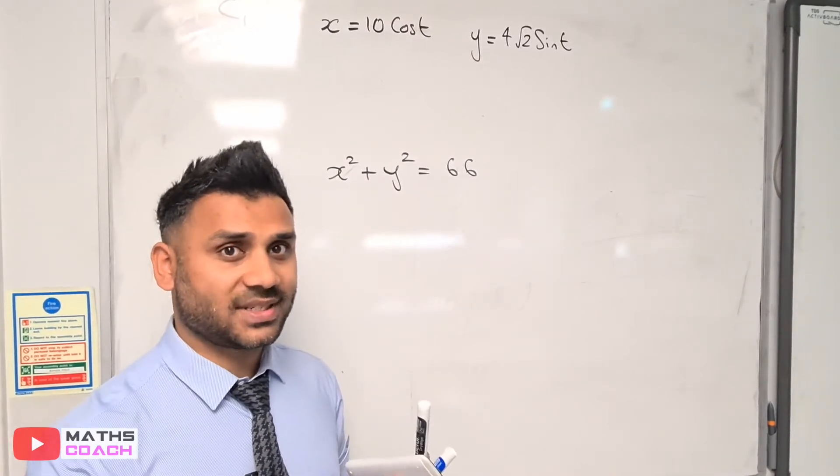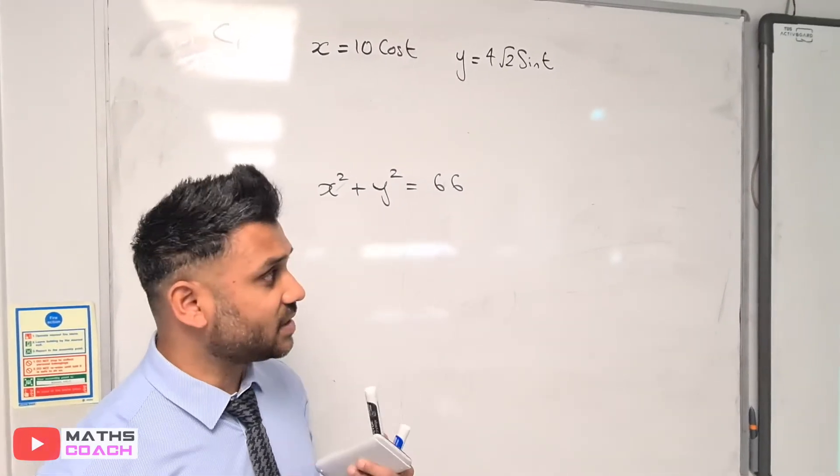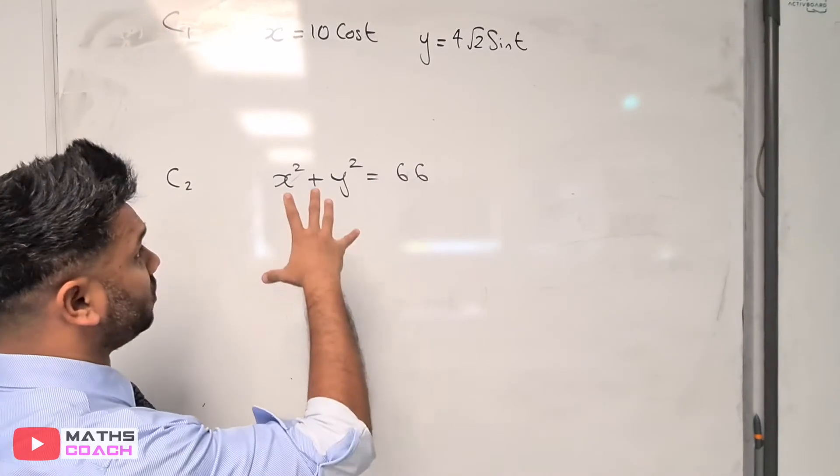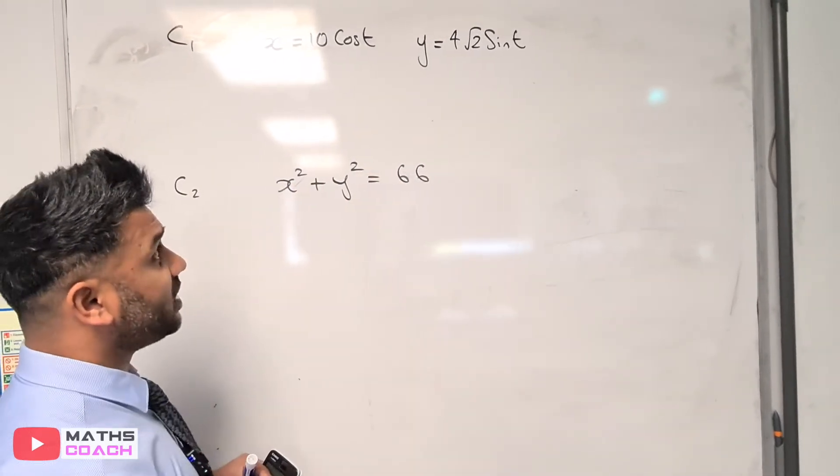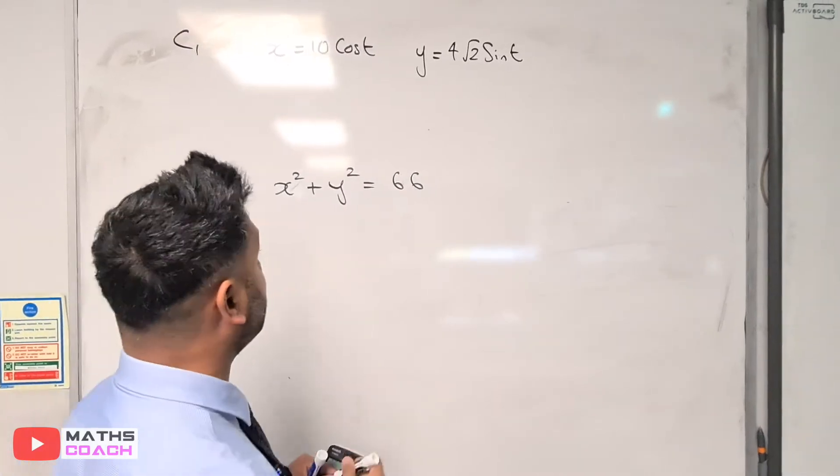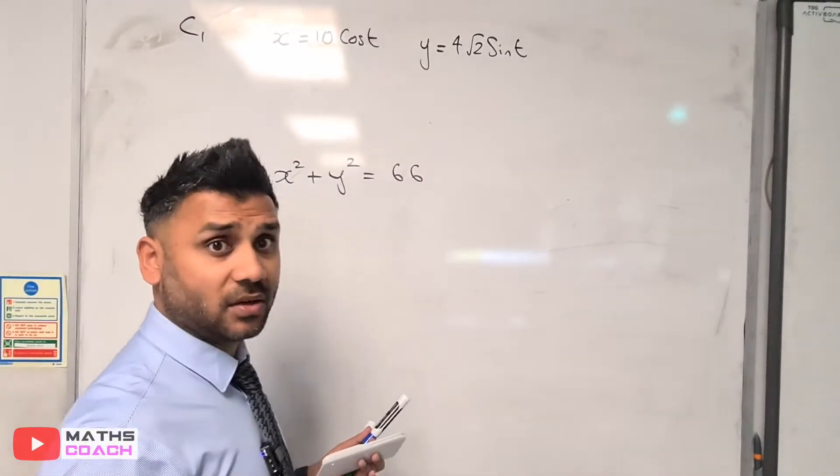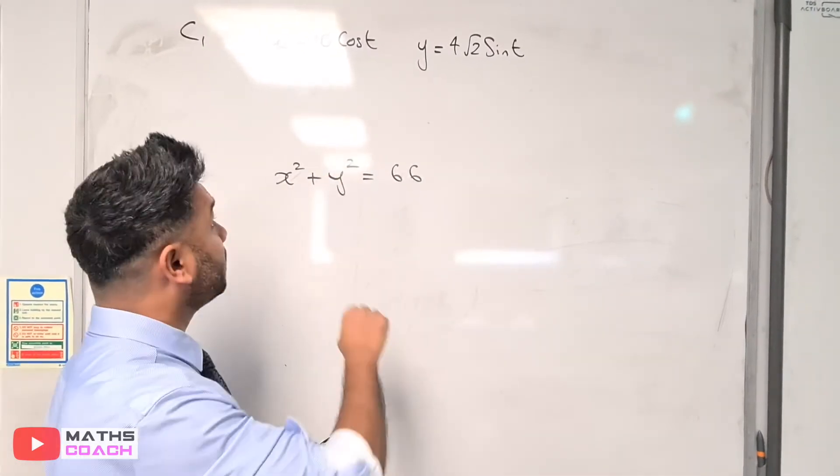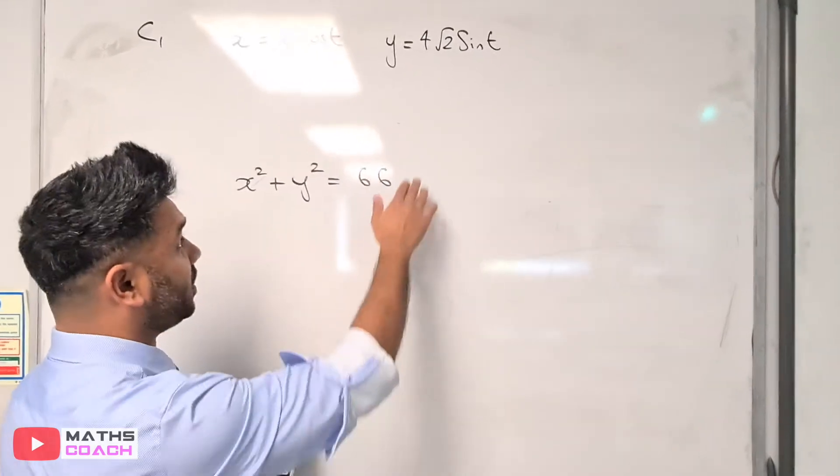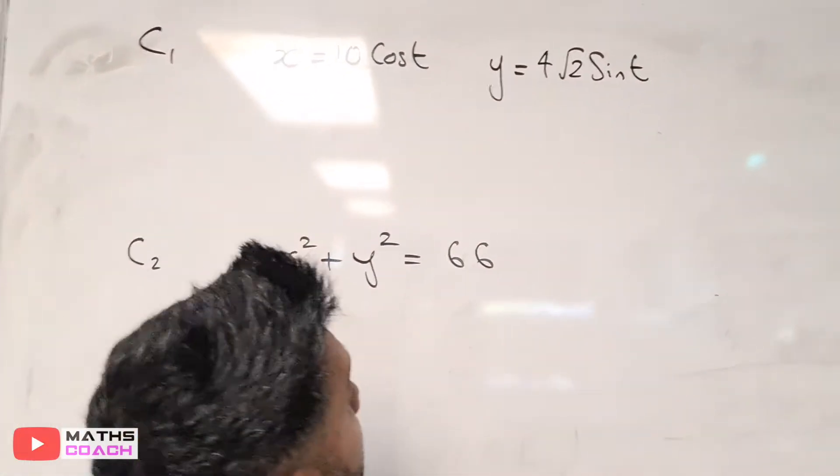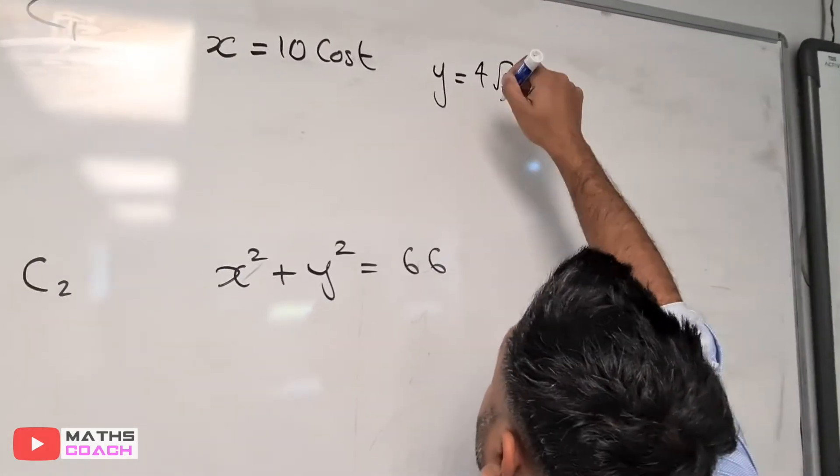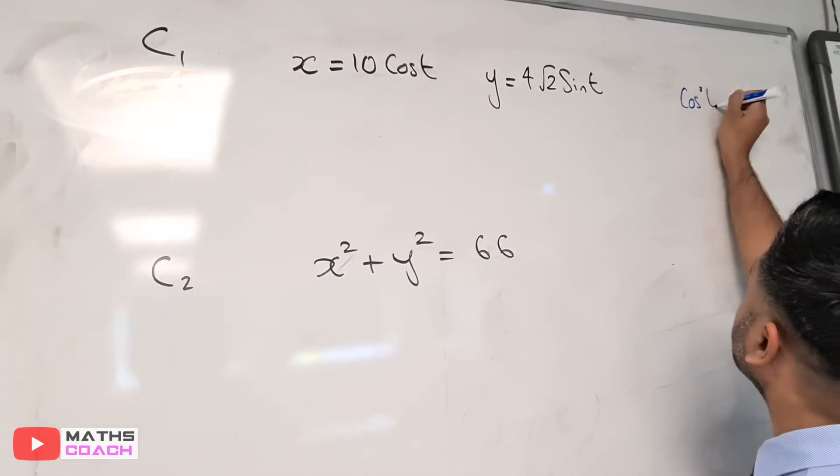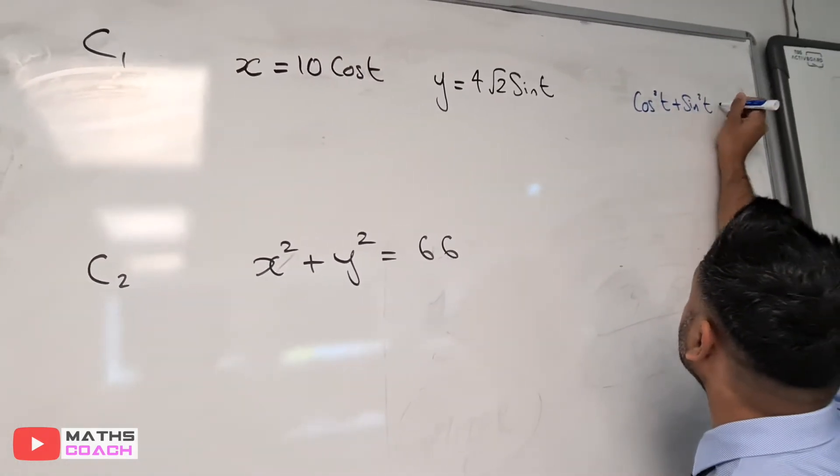When curves intersect they have the same x and y value at that point. To solve this simultaneously, we need to combine the equations together. One approach is to get them both into the same format. This is a Cartesian equation only involving x and y. This is a parametric equation. My first step will be turning this into a Cartesian equation using the identity cos²t + sin²t = 1.